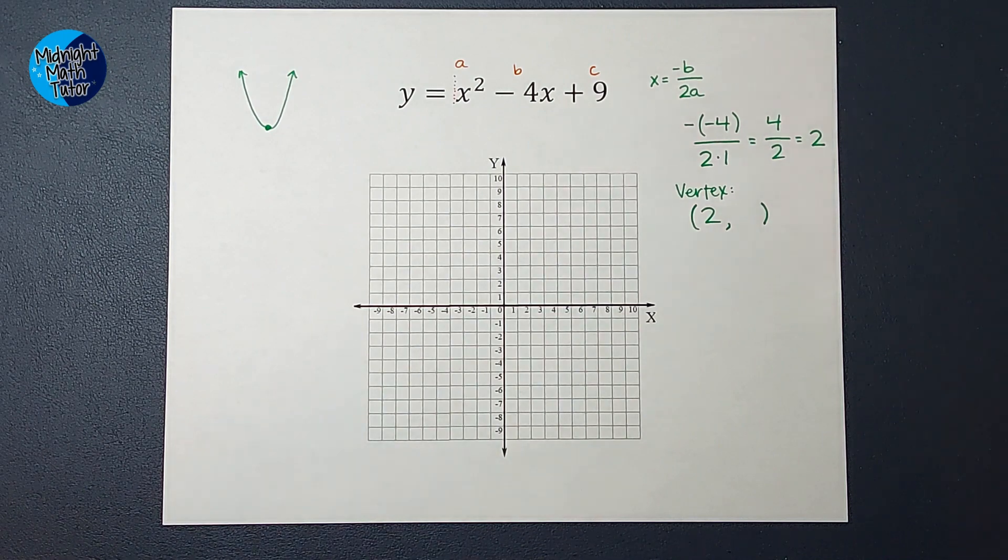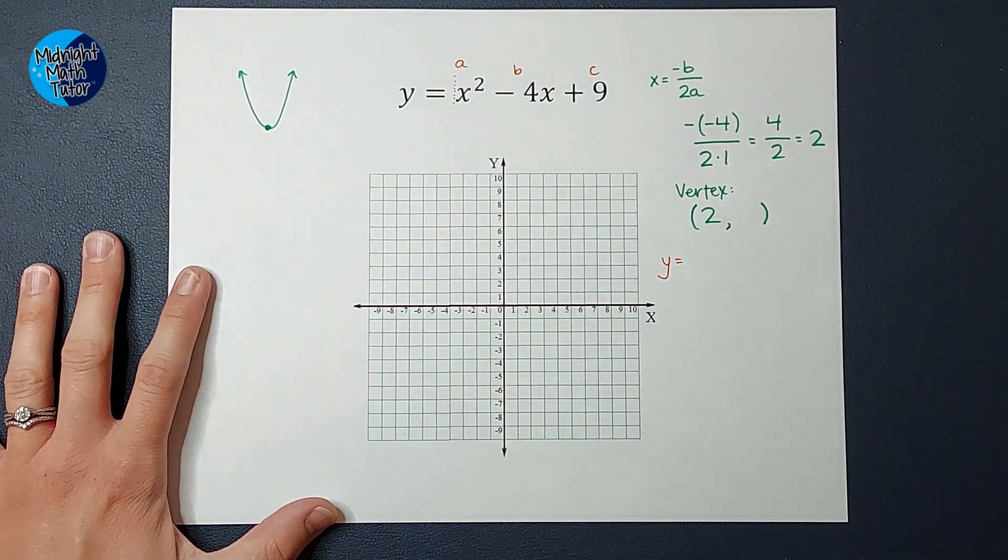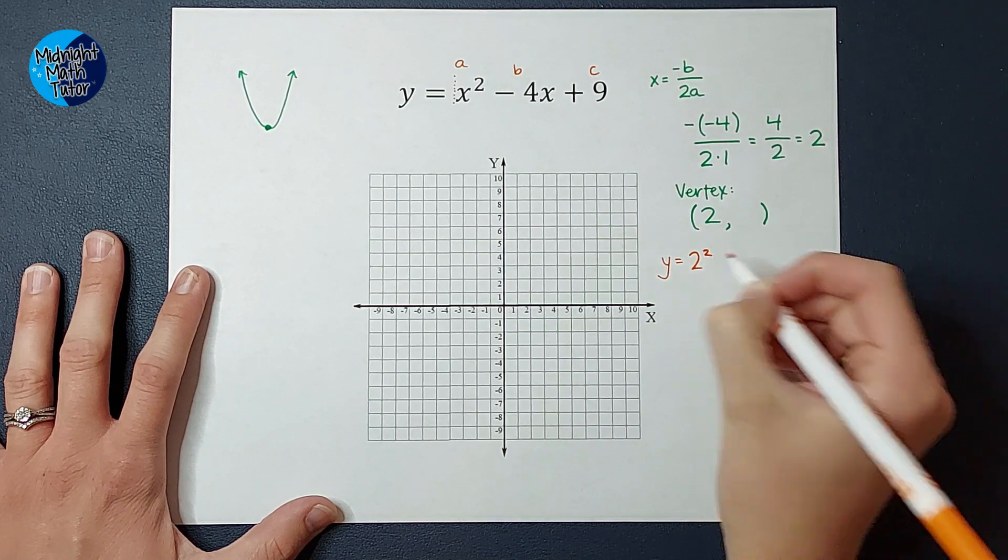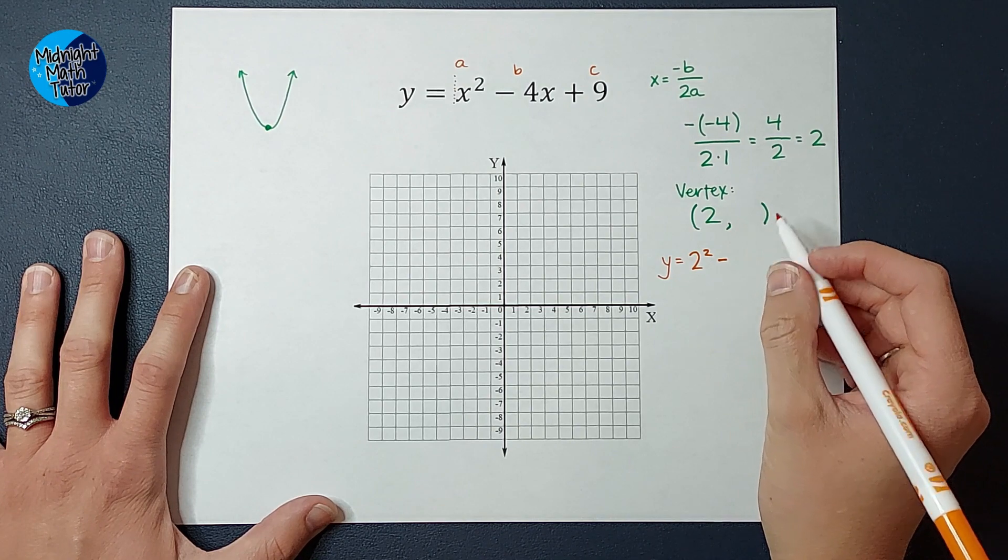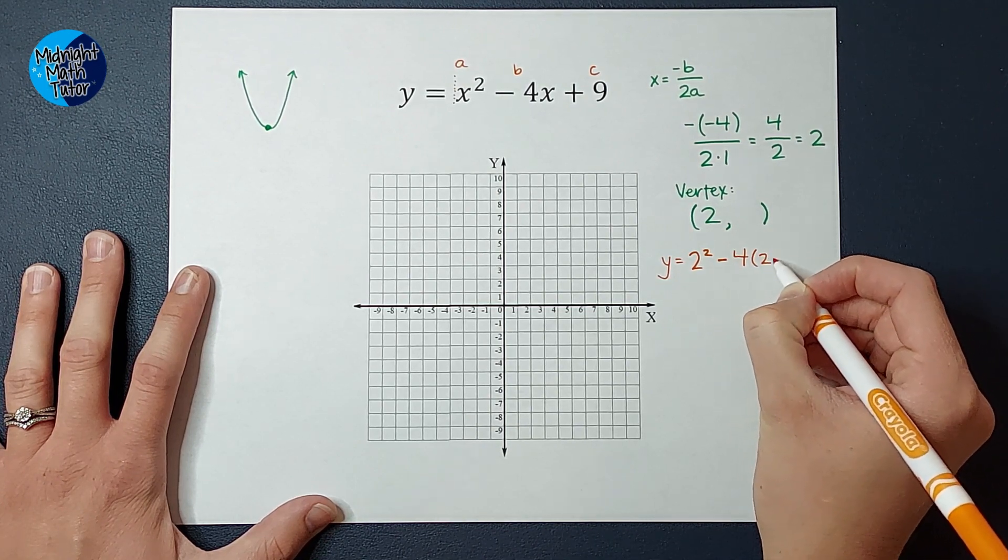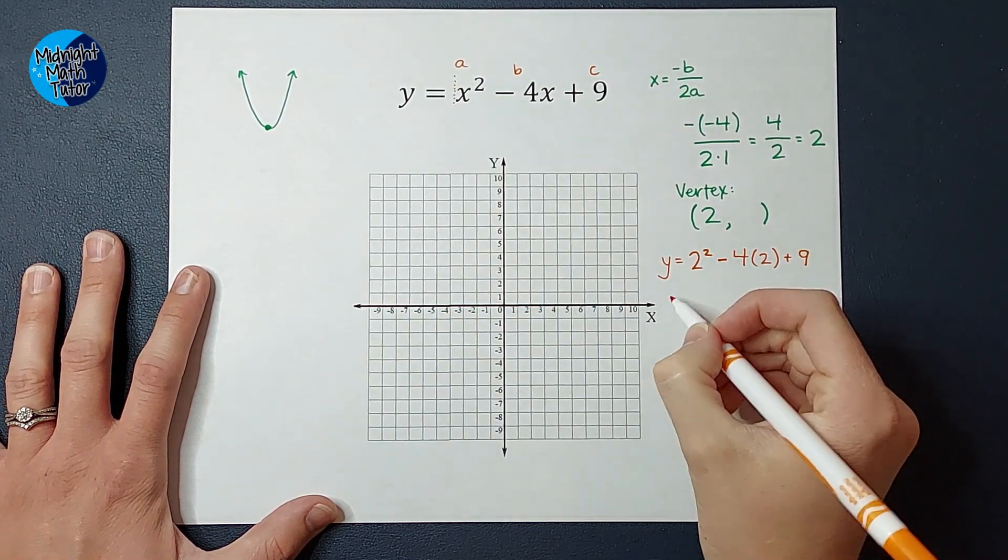So let's go ahead and do that. So now I'm going to have y equals x squared. We want to know what y is when x is 2. So we're going to plug in 2. So I'm going to get 2 squared minus 4 times x, which is 2, plus 9. So let's go ahead and simplify that down.